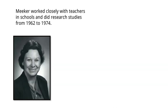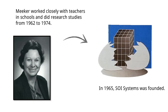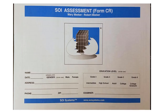So maybe a person begins in the low range where they're rejected from a job or failing a test because certain intellectual abilities are so difficult for them. However, if they improve those things and get better at them, then they move into the higher green zone where they're accepted for a job or passing a test. This is a really exciting possibility with lots of implications. Mary Meeker started doing a lot of research and worked closely with teachers in schools, conducting research studies from 1962 to 1974. In 1965, SOI Systems was founded by her and her husband, creating an educational consultancy built on J.P. Guilford's work — simplifying it in certain ways and expanding it in others.